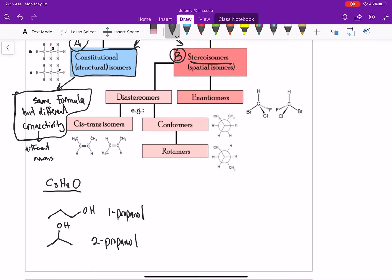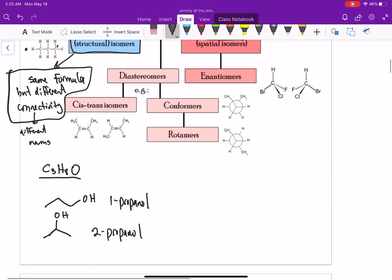Or we could even have a completely different functional group. Something like this. And we don't need to worry about the name of this compound now. This would be methoxyethane, one methoxyethane. But we're not going to learn how to name ethers yet in this semester.